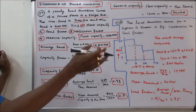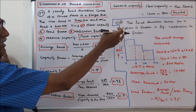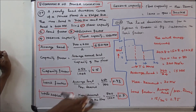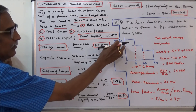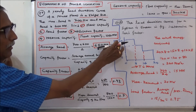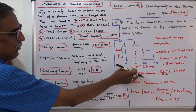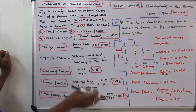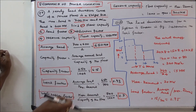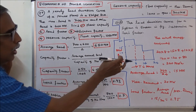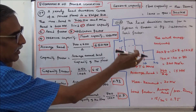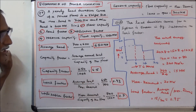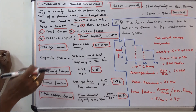The last problem: the load duration curve for a system is shown in the figure — determine the load factor. The maximum demand is 20 megawatts; the x-axis is time in hours and the y-axis is in megawatts. The actual energy consumed in 24 hours is: 20 multiplied by 8 plus 15 multiplied by 8 plus 10 multiplied by 8, which equals 360 megawatt-hours.